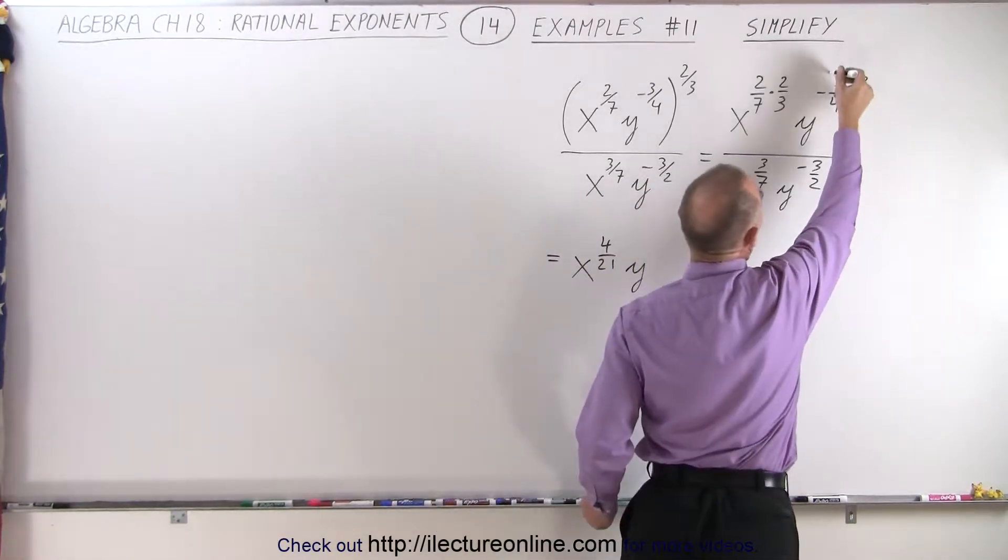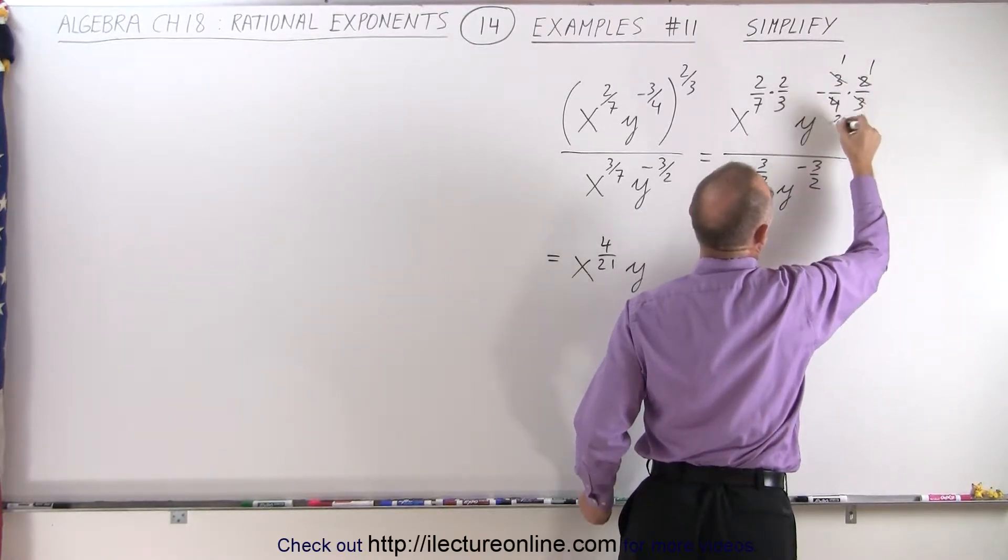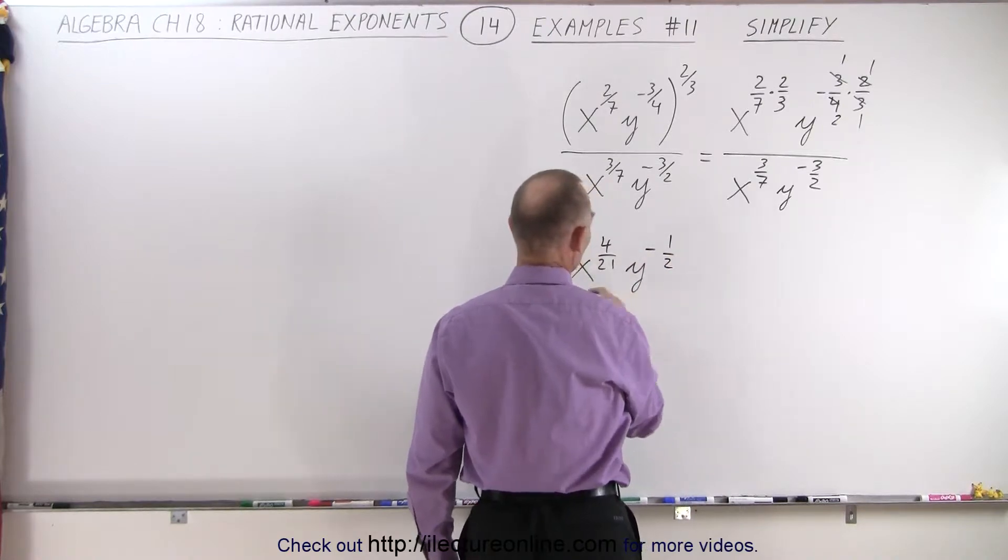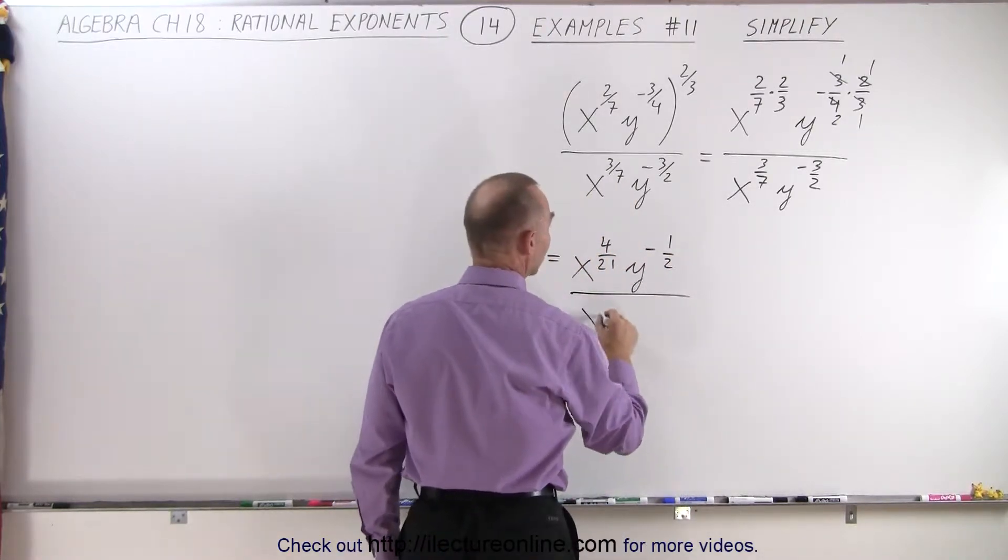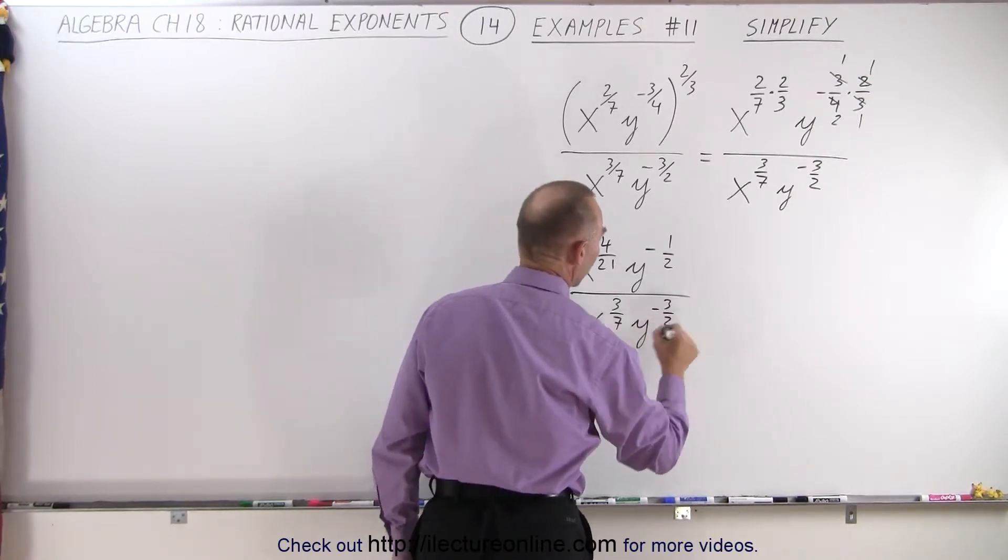Y, 3/4ths times 2/3rds. Notice the 3's cancel out, and the 2's becomes, this becomes 2, this becomes 1 over 2, so we end up with minus 1 half. All divided by x to the 3/7ths power and y to the minus 3 over 2 power.